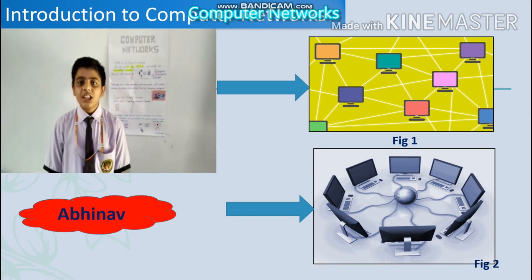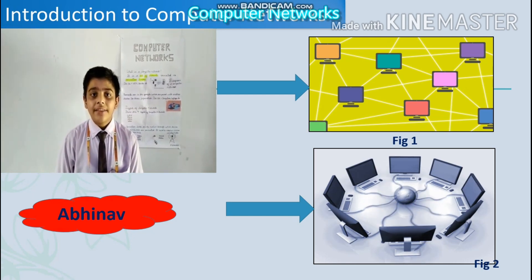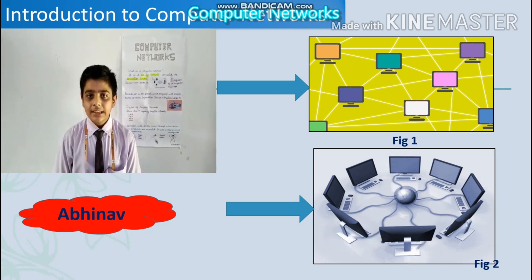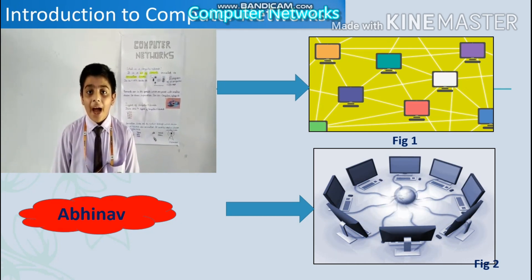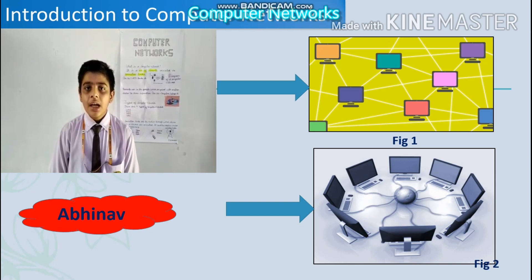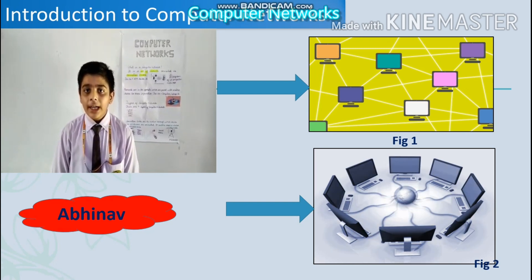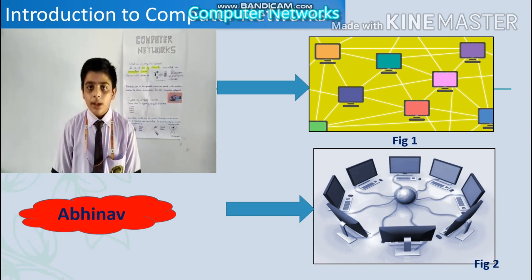Now let us move to some types of computer networks. There are four types of computer networks. They are: PAN or Personal Area Network, LAN or Local Area Network, MAN or Metropolitan Area Network, and WAN or Wide Area Network.